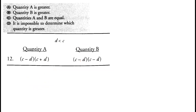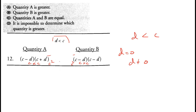We have (c minus d)(c plus d) versus (c minus d) squared, given d is less than c. If d equals zero, both expressions equal c squared, so they're equal. If d is not zero, let's try d equals four and c equals five: quantity A is (5 minus 4)(5 plus 4) equals 1 times 9 equals 9, and quantity B is (5 minus 4) squared equals 1. So quantity A is greater.